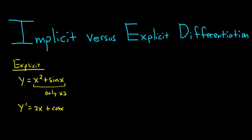So here y is explicitly defined in terms of x. We only have x's. We could have a number here, let's do it, plus 4. The answer still remains the same. So there's no y's here. So that's what we mean by explicit differentiation. y is explicitly given, and we can find the derivative.